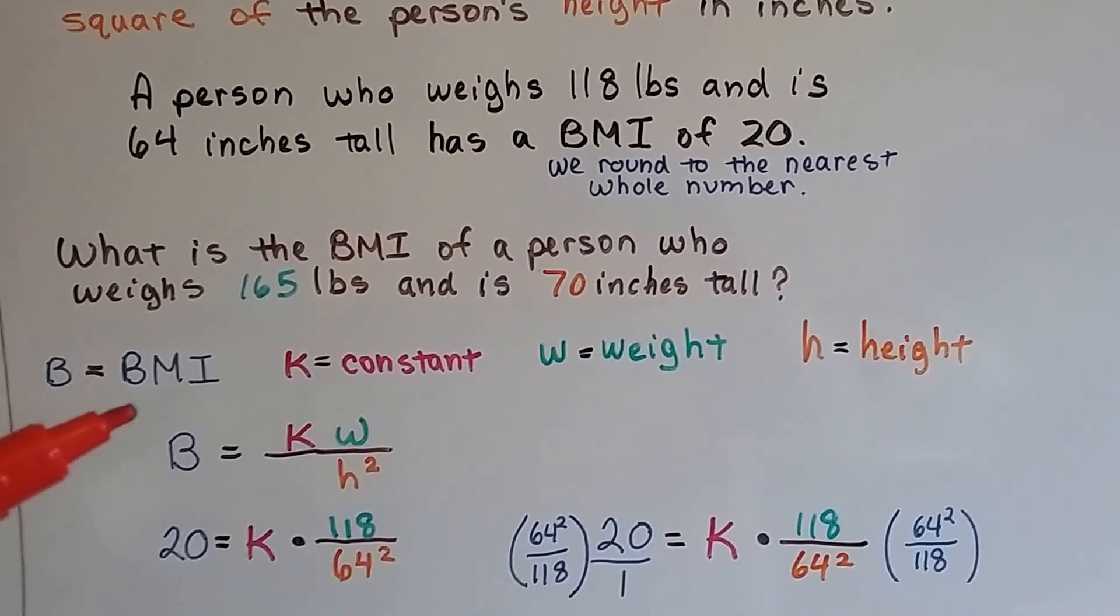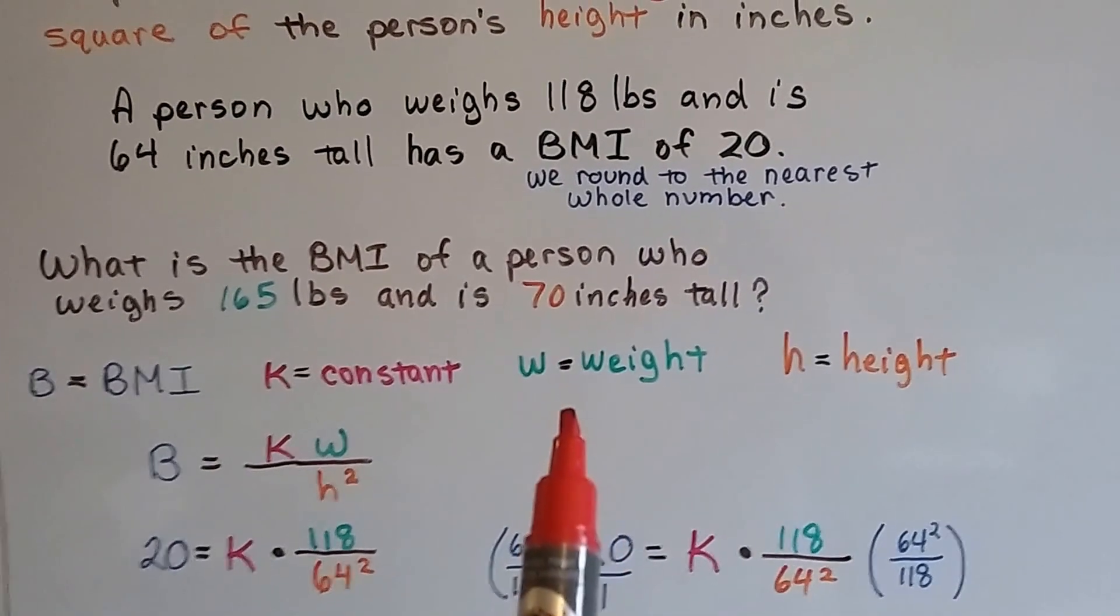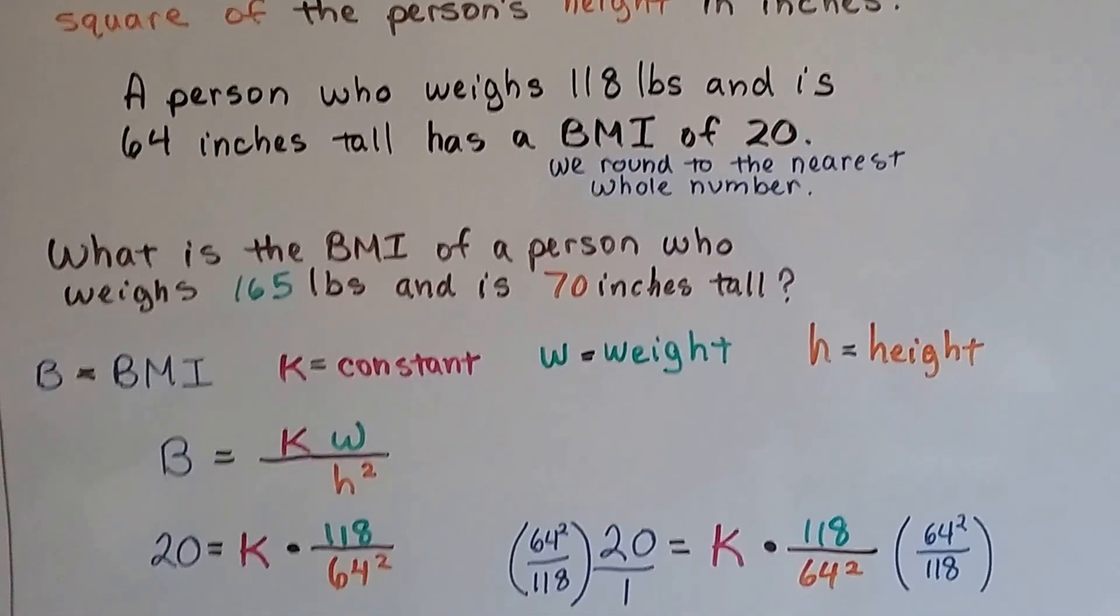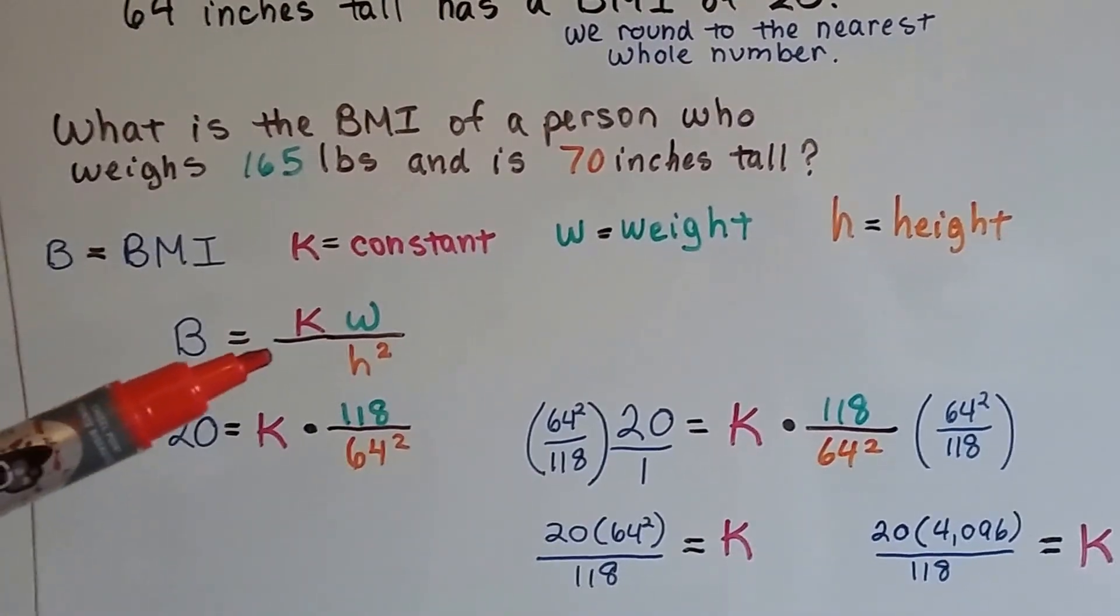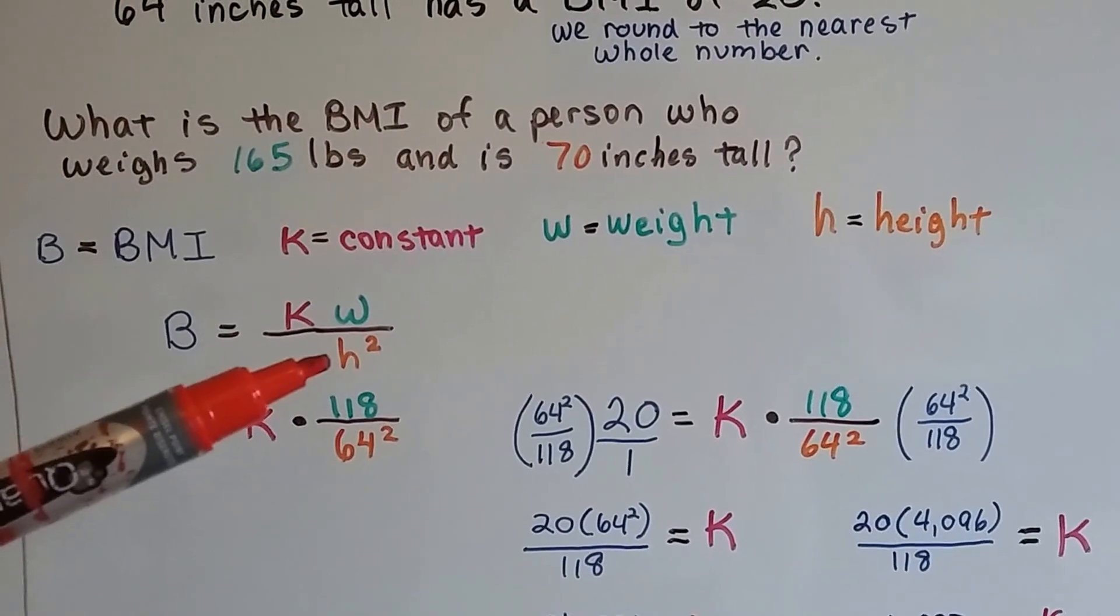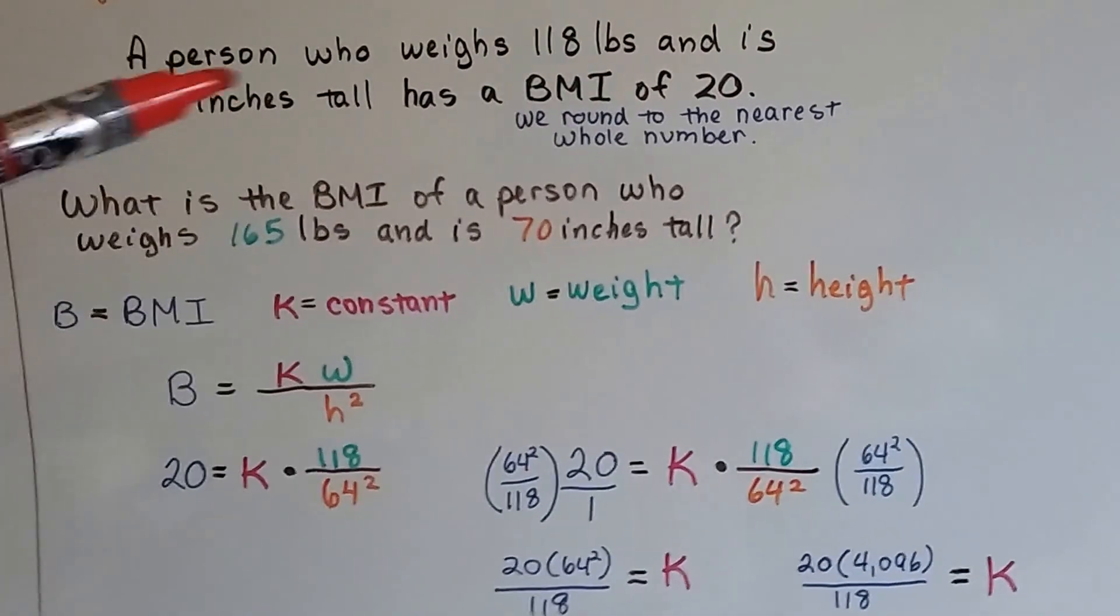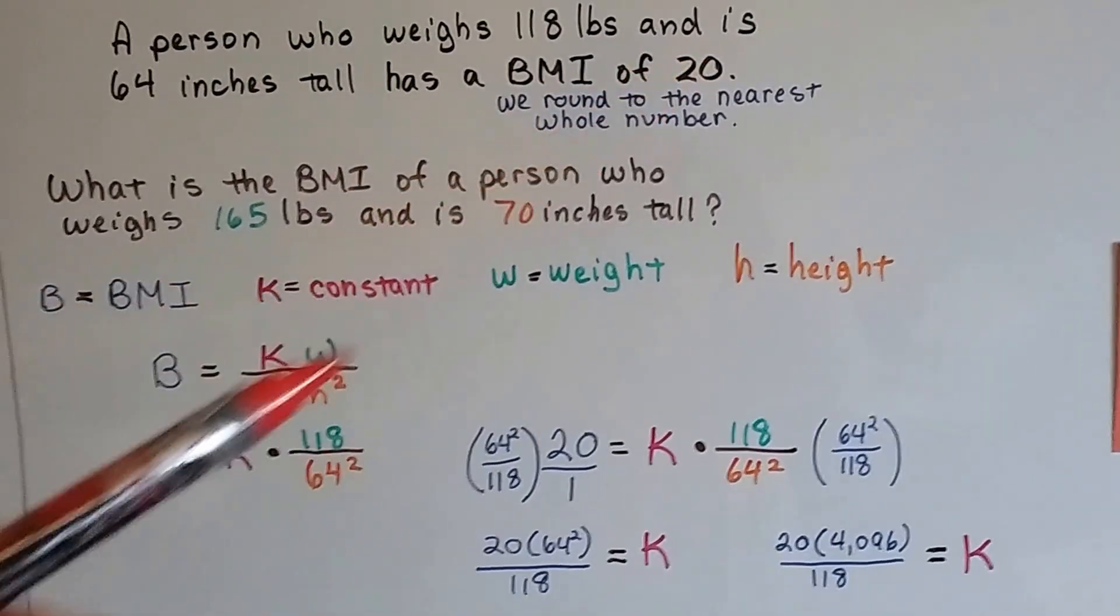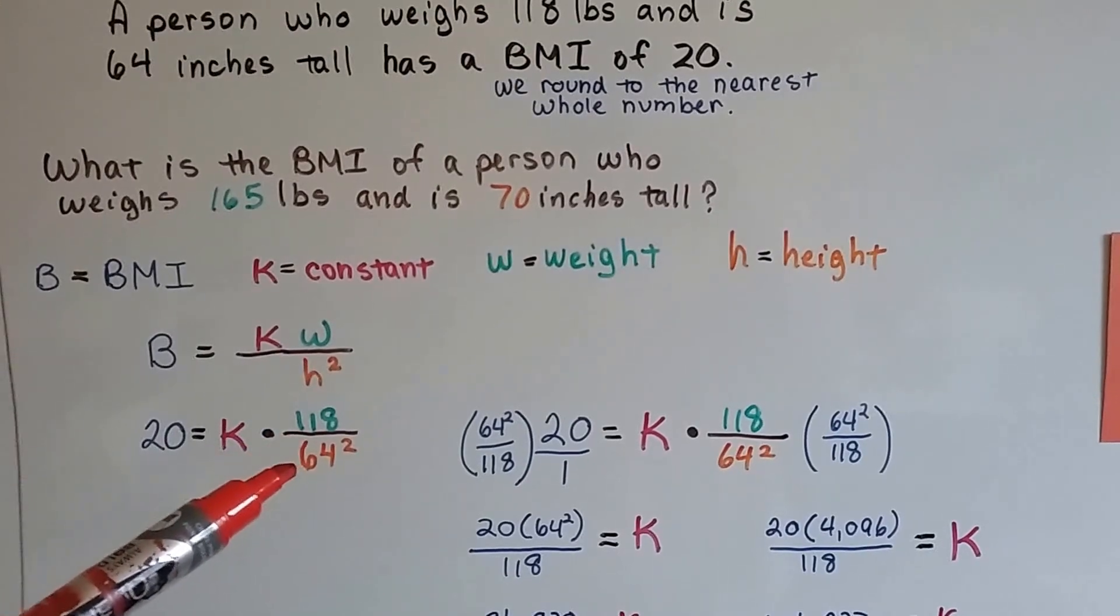B is going to be the BMI. Our k is going to be the constant variation. The W is the weight and the H is the height. Remember the height has to be squared. So we've got B equals K times W divided by H squared. Using this information, we've got a BMI of 20 equals K times 118 divided by 64 squared.